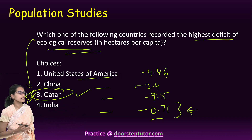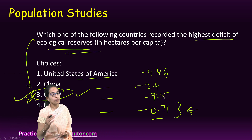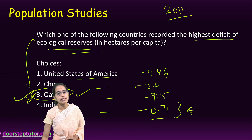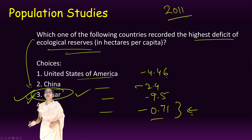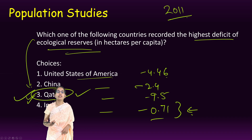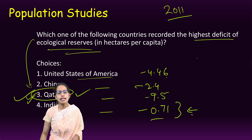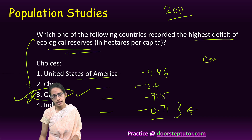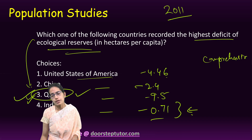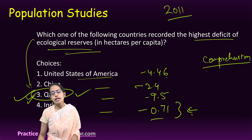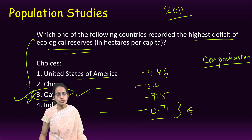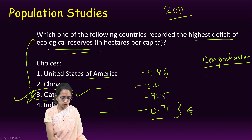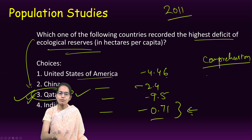In Population Studies, many questions came from the contemporary section based on the 2011 Census. Key areas include census terminology, the gender gap, and reading life tables. The last two questions were comprehension-based and relatively simpler if you understand the passage and have basic knowledge of population studies concepts. The complete paper solution is available in the link below.